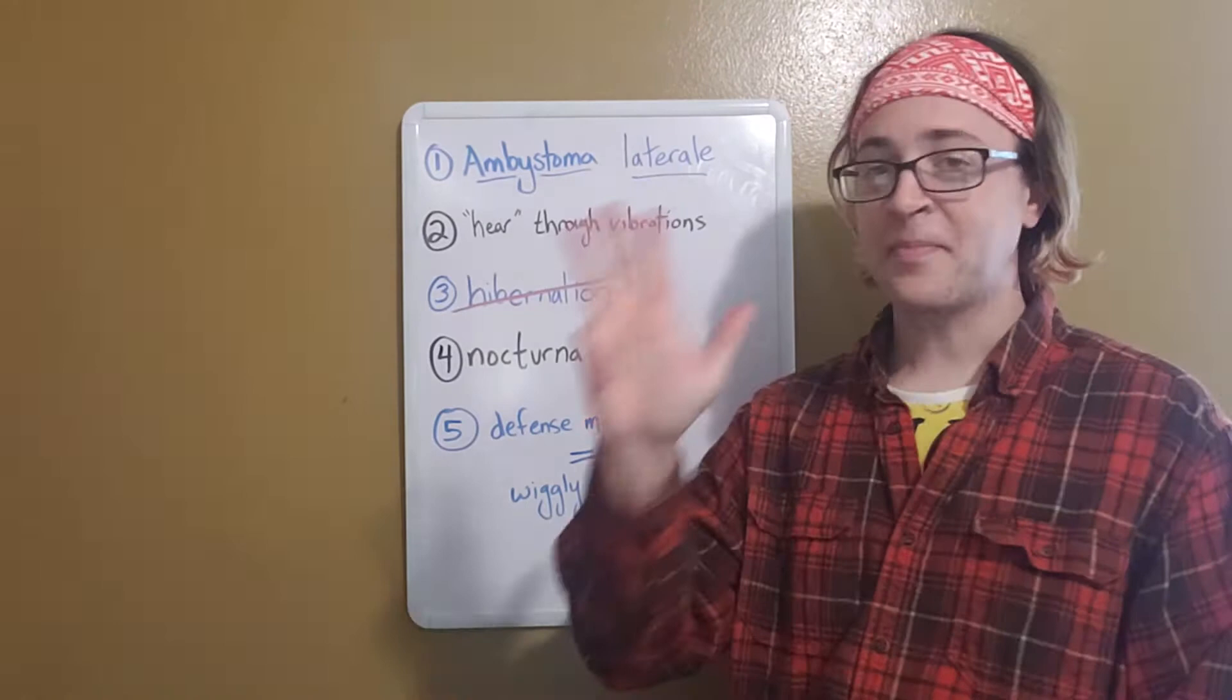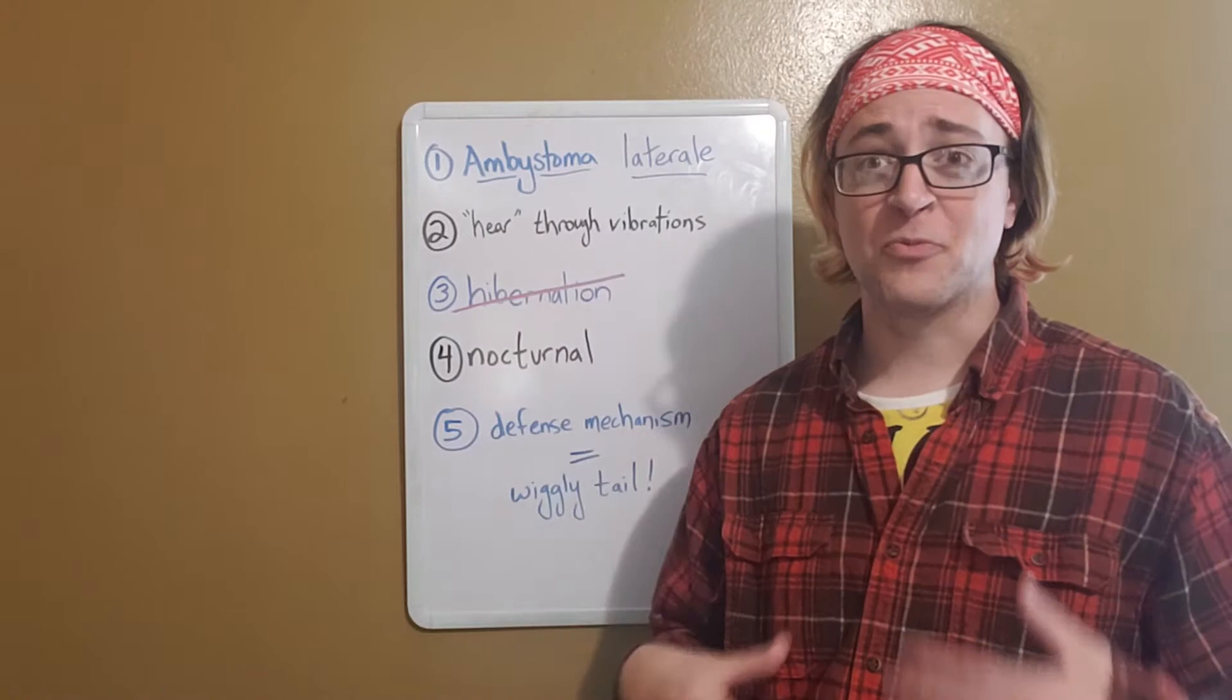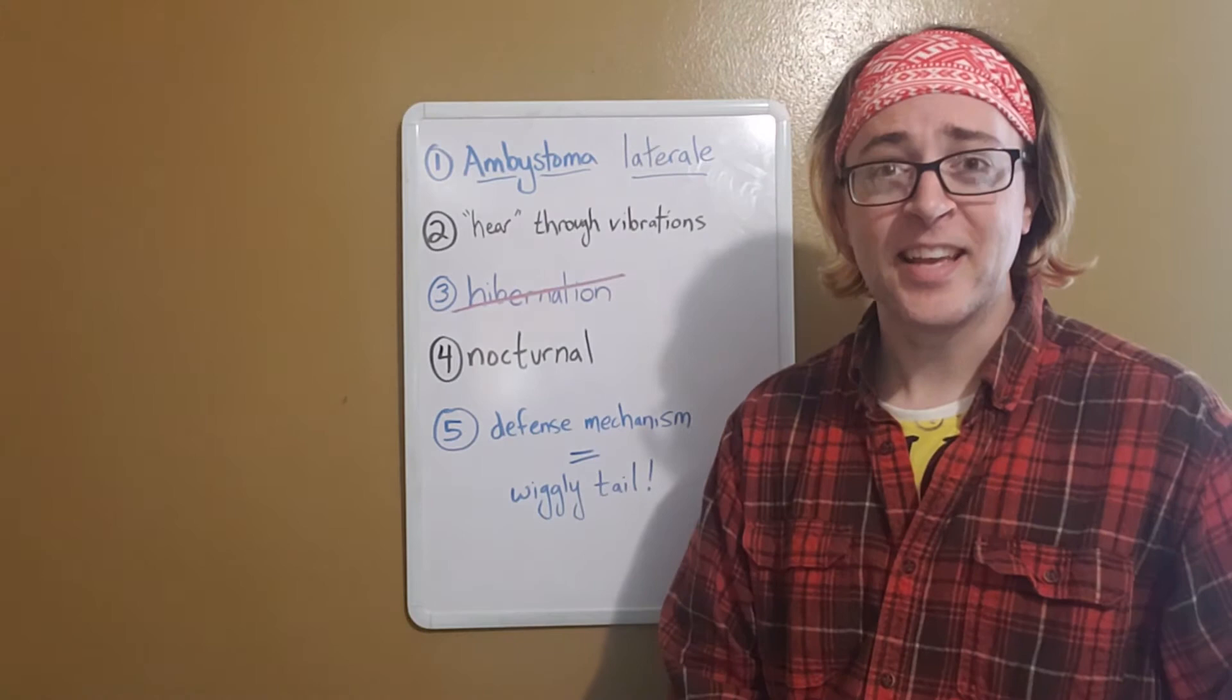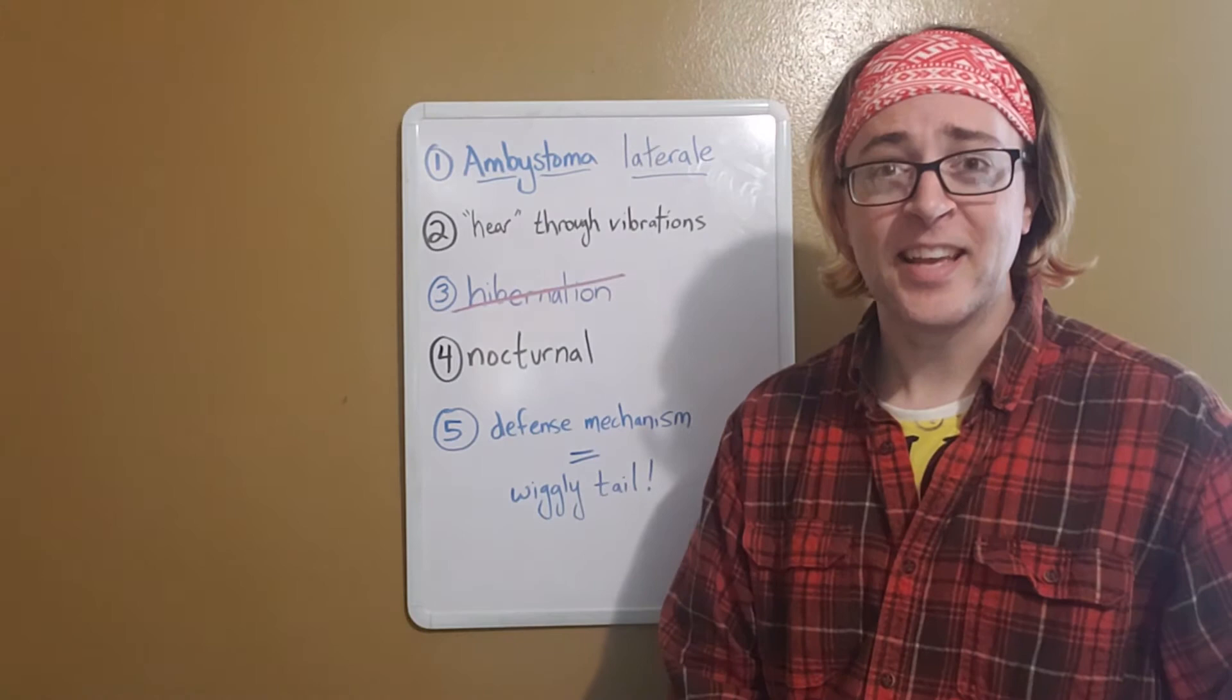Fact number four. Blue-spotted salamanders are nocturnal. They are most active at night, not during the day. During the day, especially in the summer, the sun is out. It's really hot. And that has the potential to really dry out the blue-spotted salamanders. And so instead, they'll do their hunting at nighttime. When it's a little bit cooler out, they're able to retain more moisture, and it's safer for them to be out in general.